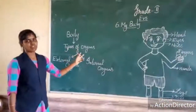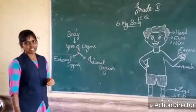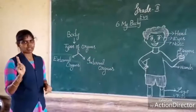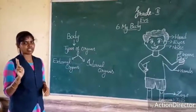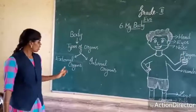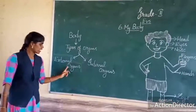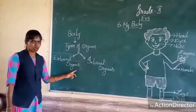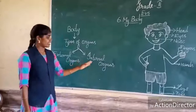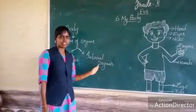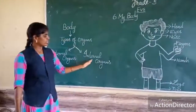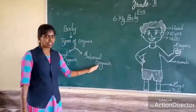How many types of organs do we have? We have two types of organs. First one is external organs, and second one is internal organs.